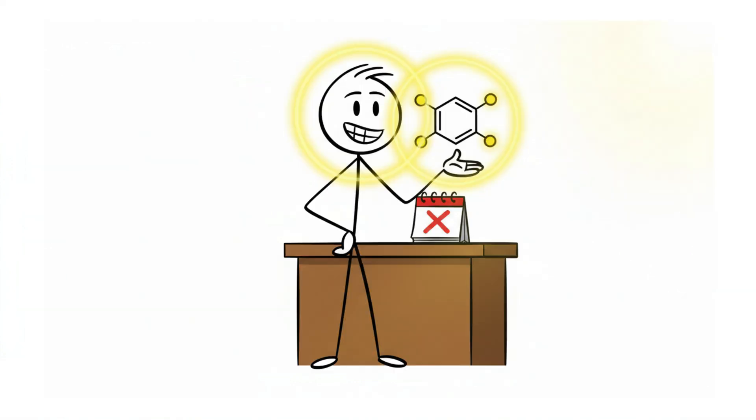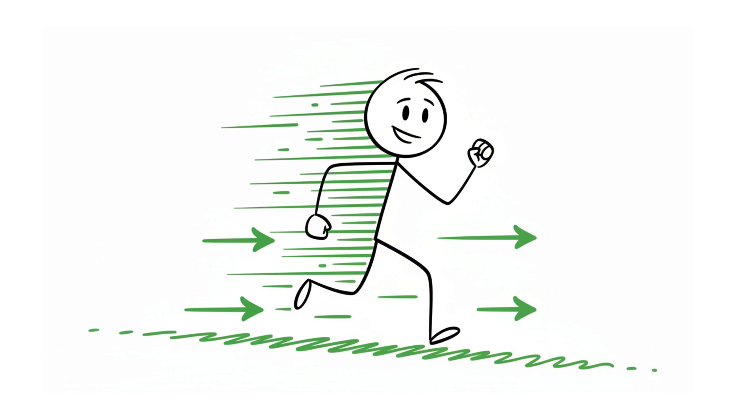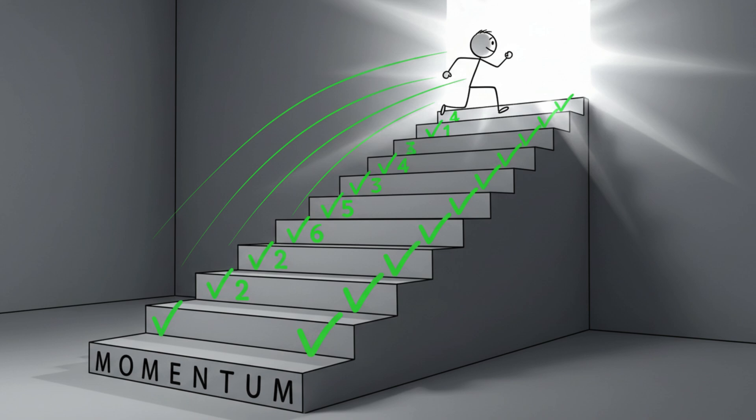Completing a workout, you trigger a chemical reward, dopamine, that makes you feel good and urges your brain to do it again. That small burst is how momentum is built in your life.